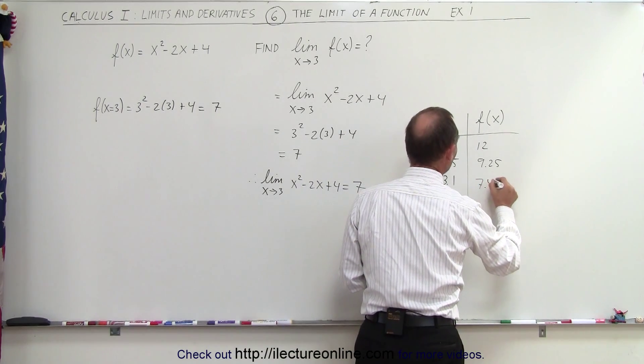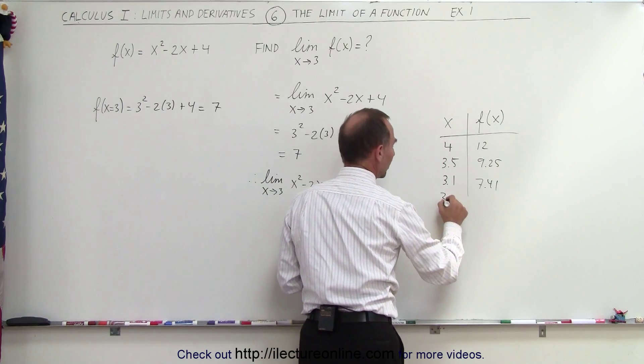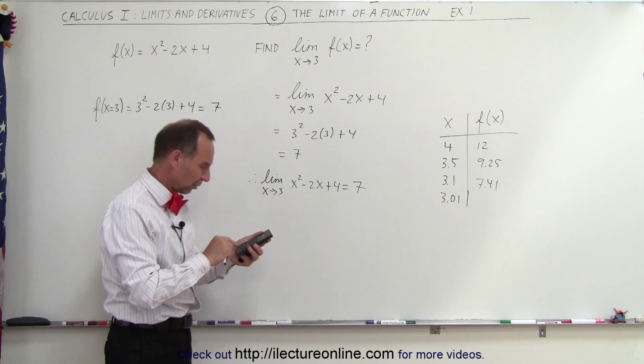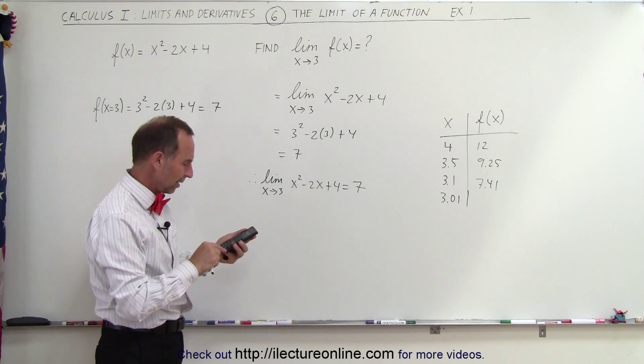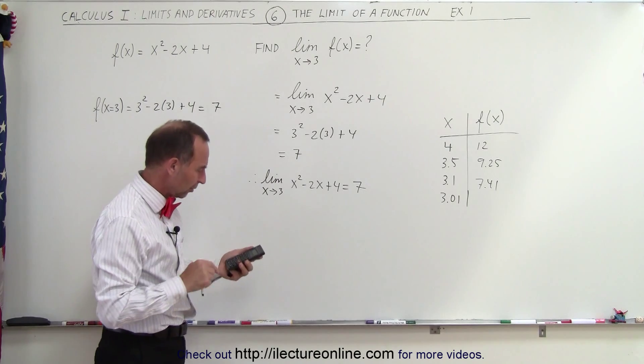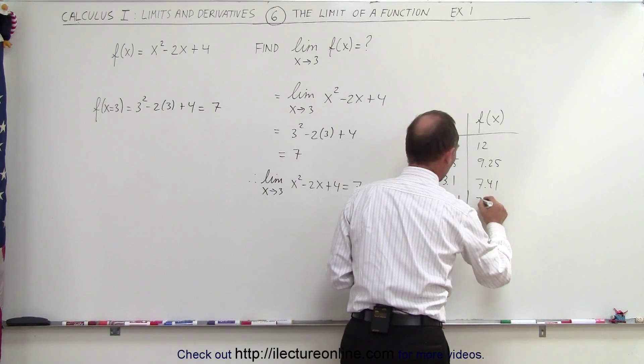How about 3.01, what is the function equal to now? So 3.01² minus 2 times 3.01, which is 6.02, plus 4, equals, we get 7.04.